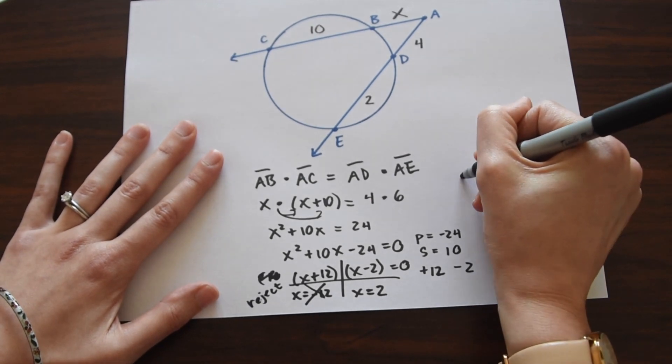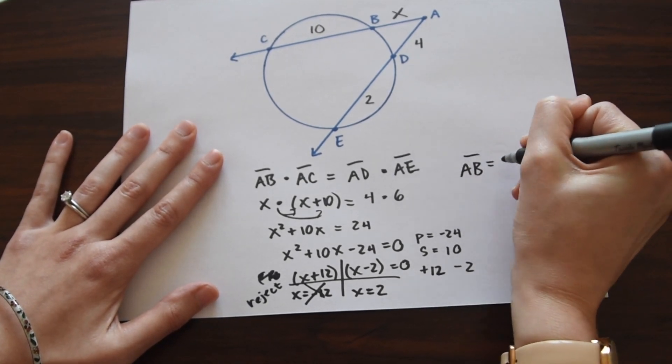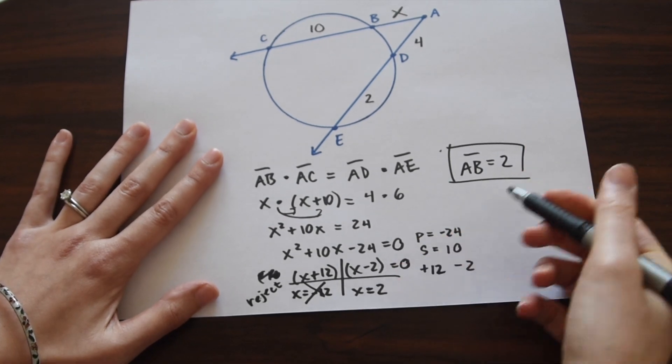So that leaves us with one answer which gives us AB is equal to 2. So X is equal to 2. AB is equal to 2. So that's our answer.